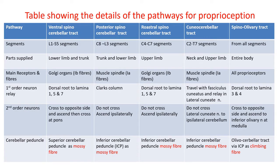The spinoolivary tract receives inputs from all segments of the spinal cord from the entire body — proprioceptors. They enter through the dorsal root ganglia into the dorsal gray matter and relay in lamina 3 and 4. The second-order neurons cross to the opposite side and ascend as the spinoolivary tract, relaying in the inferior olivary nucleus in the medulla. From the olivary nucleus, the olivocerebellar tract originates and, via the inferior cerebellar peduncle, reaches the spinocerebellum as climbing fibers.